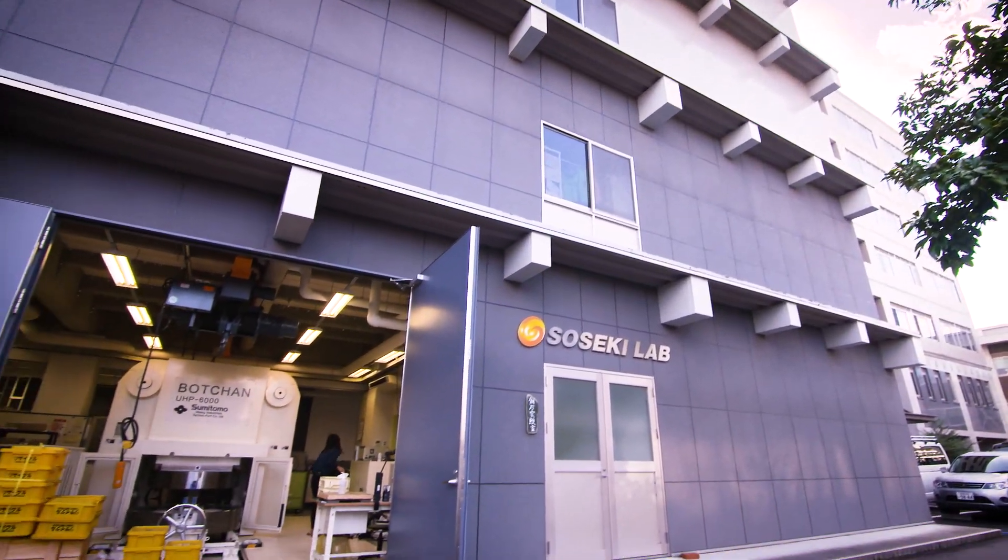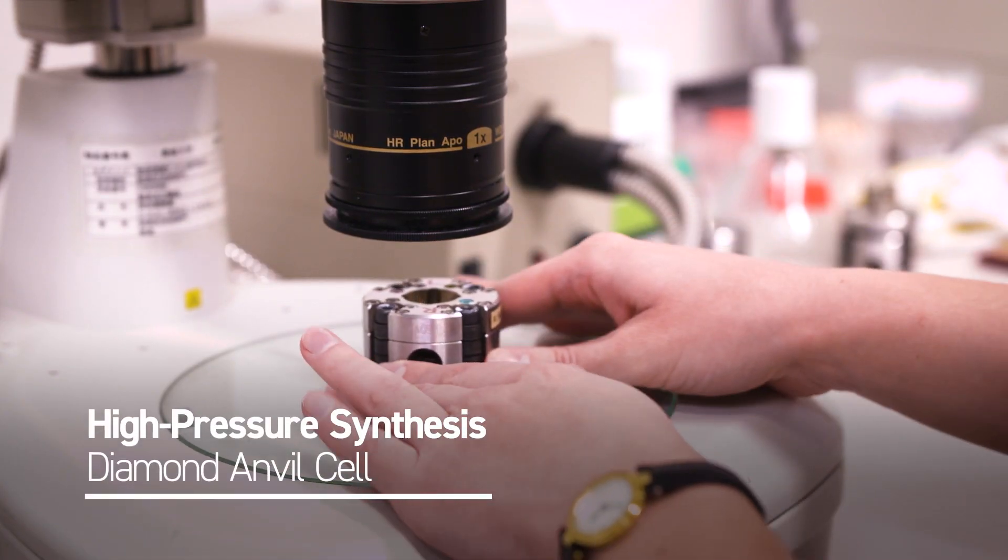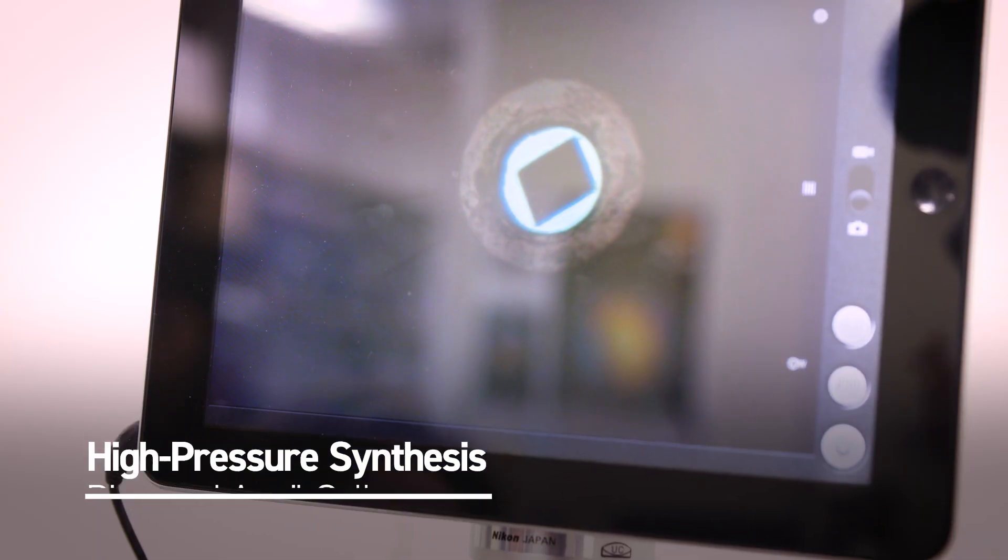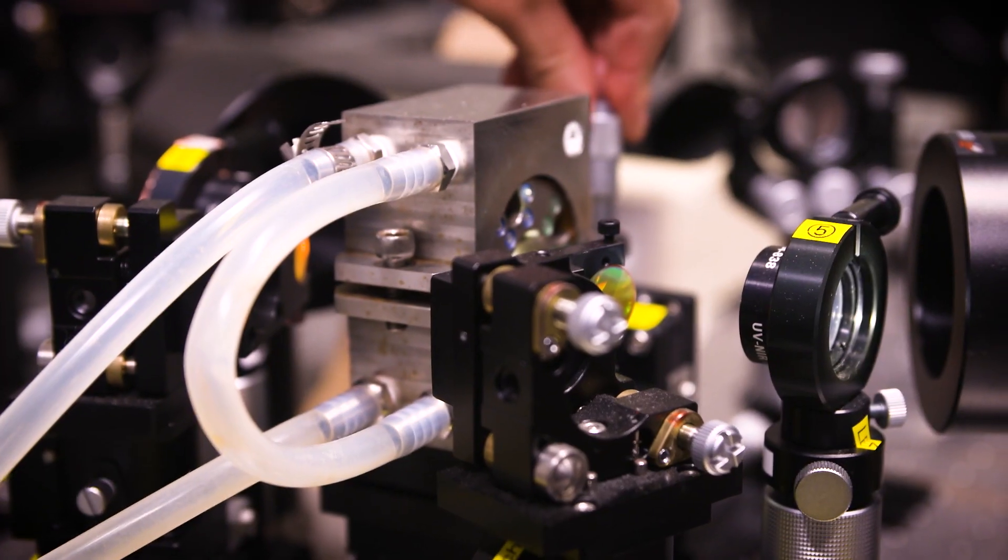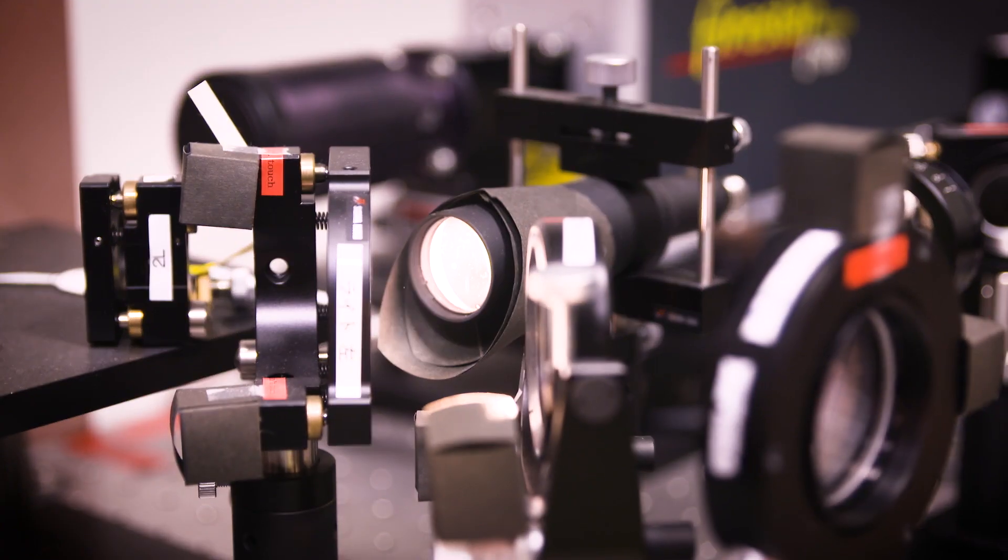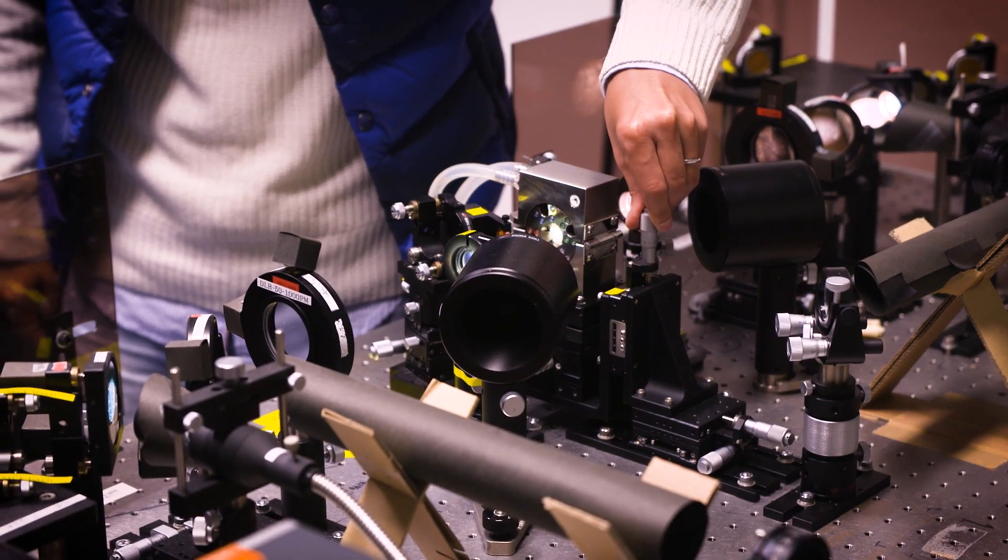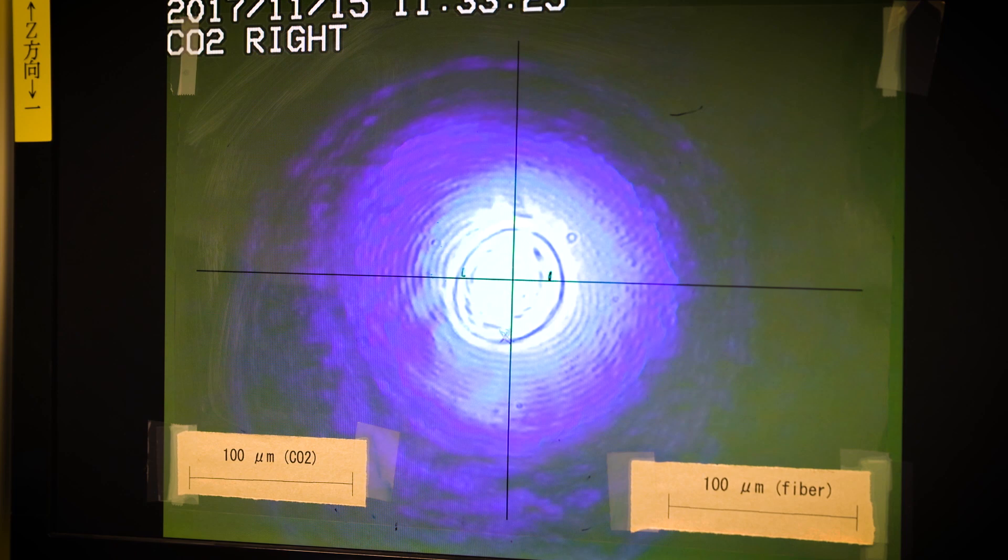Here at GRC, we use several types of high-pressure apparatus. The diamond anvil cell squeezes a tiny sample between a pair of diamonds. A laser microbeam is directed to the sample through the diamond, producing very high pressure and temperature of the earth's core.